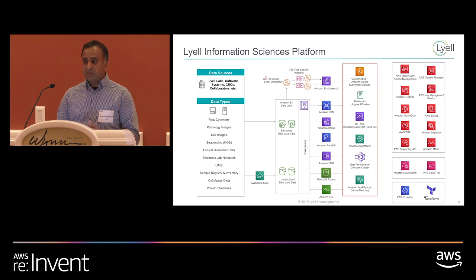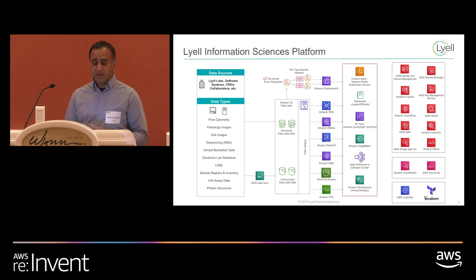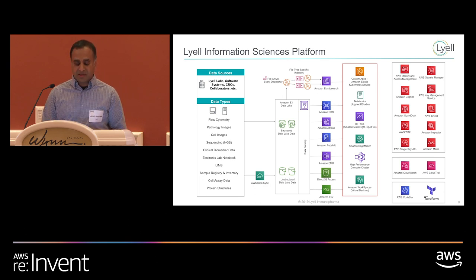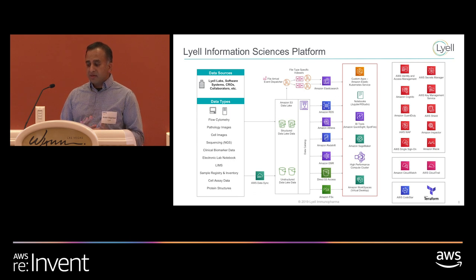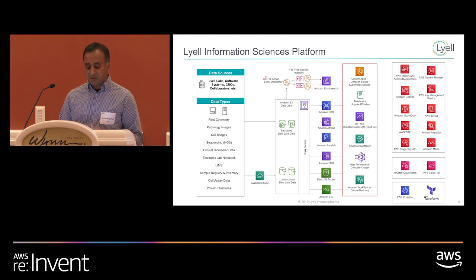There are a number of specialized Windows applications that we do support — off-the-shelf applications for things like analyzing pathology images or flow cytometry data. These are cutting-edge tools that our scientists need to use, and rather than them working with this data off their laptops, we want the tools to be as close to the data as possible. So we use Amazon Workspaces to host these Windows applications in the cloud. We are building this to be HIPAA, GDPR, and potentially GXP compliant — all infrastructure is written as code and everything has automated testing, which will significantly speed up how we meet our compliance needs.